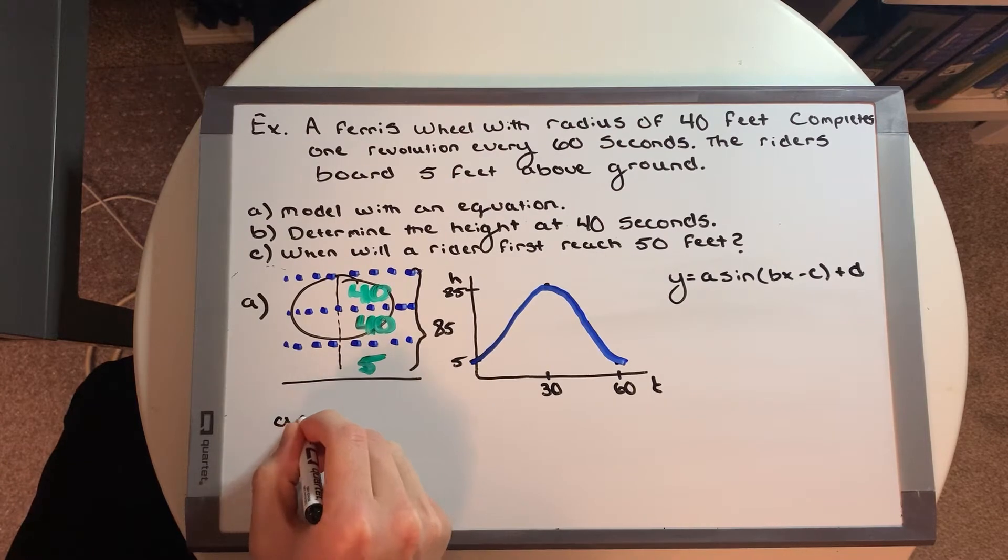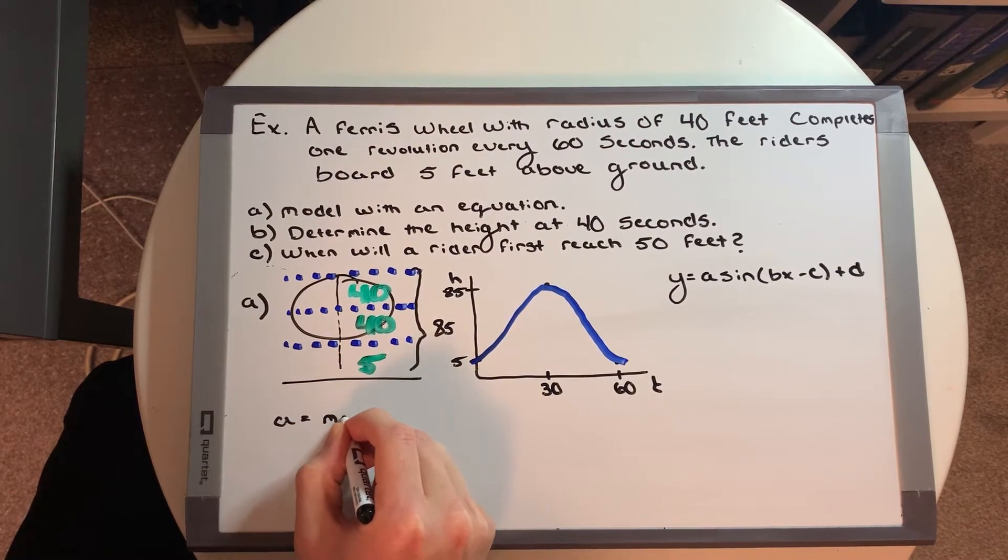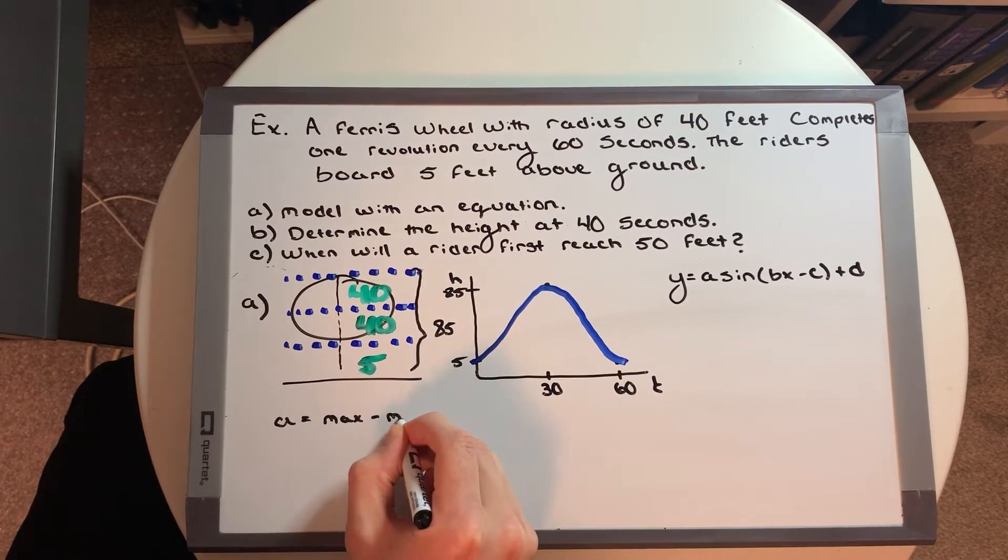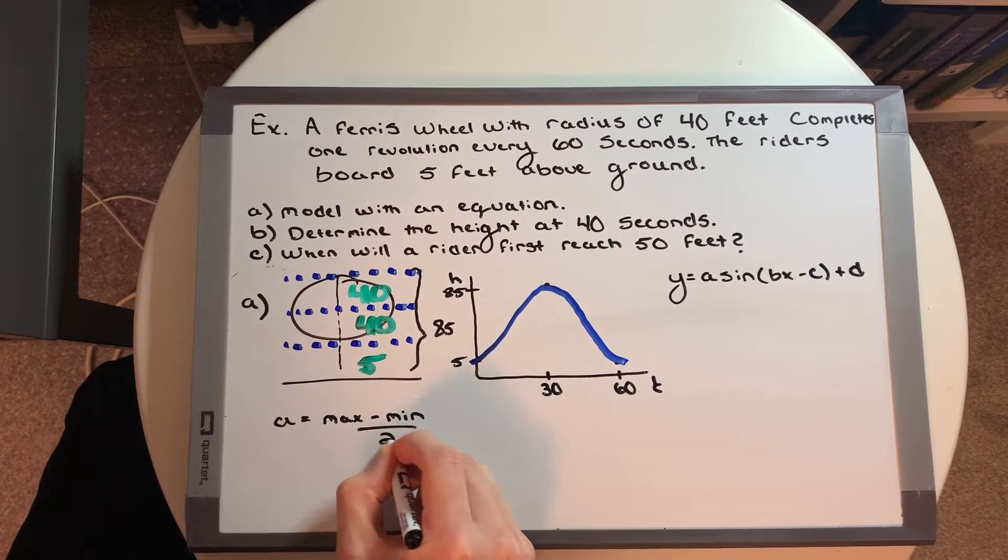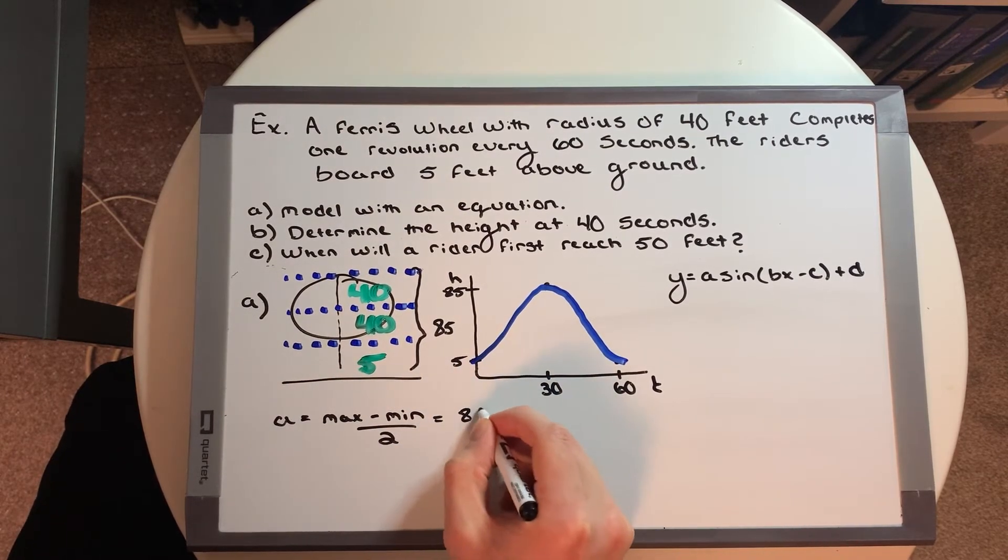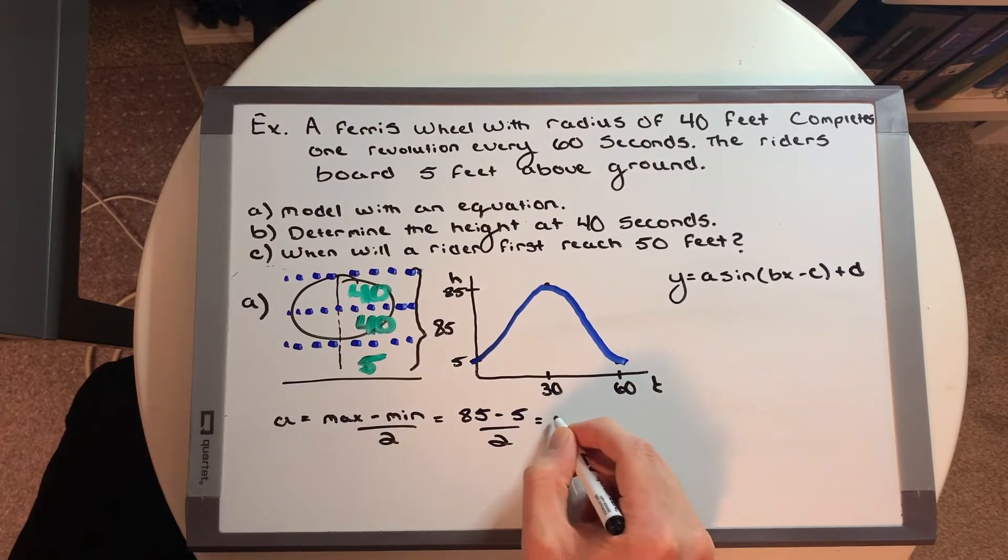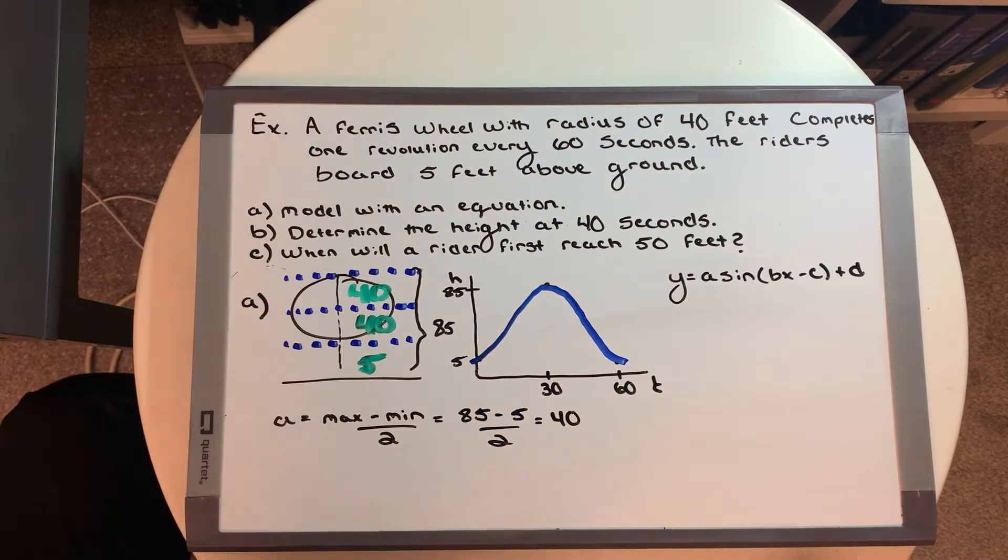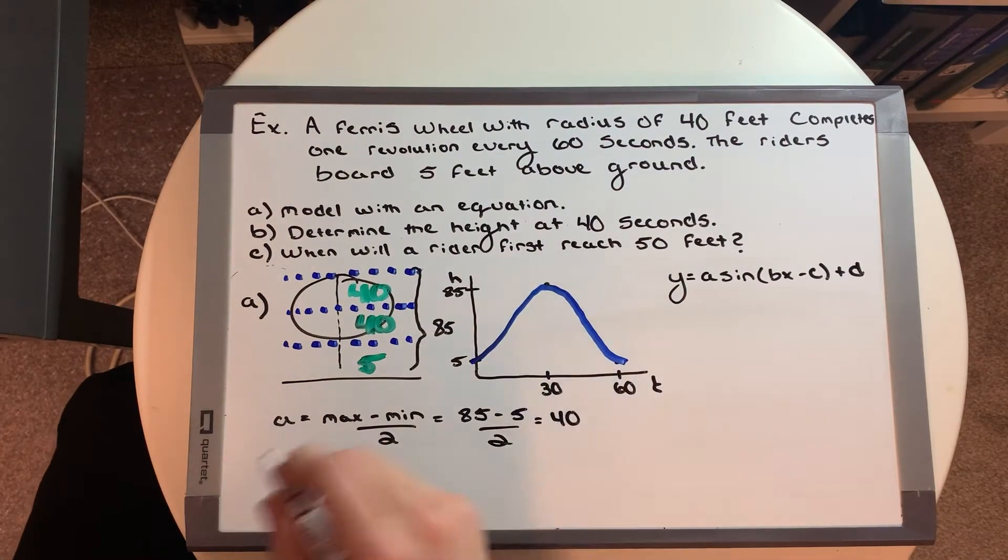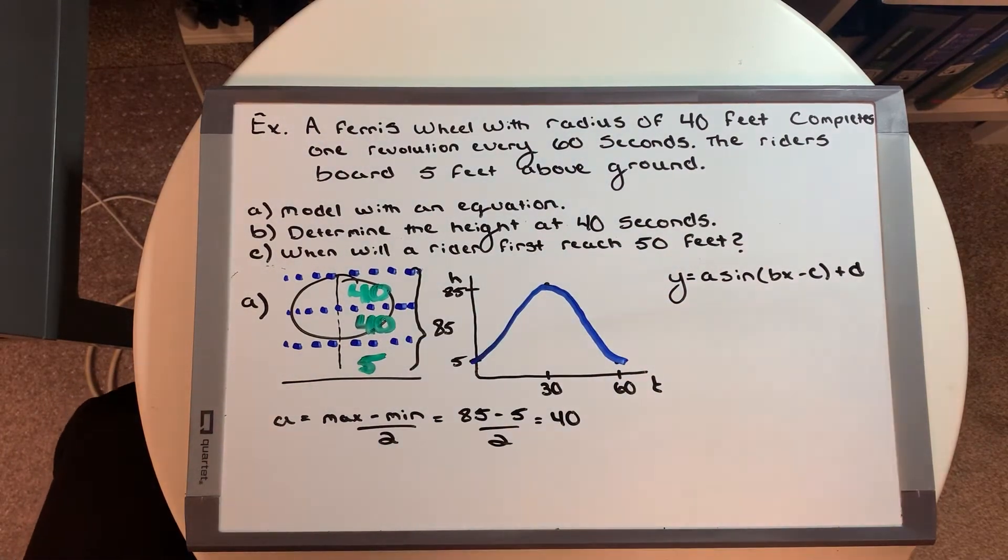A is solved as a is equal to maximum minus the minimum divided by two, which was 85 minus our five over two, which is equal to 40. Okay. So that makes sense. Cause that's our amplitude. That's how high from the middle to the bottom or from the middle to the top is. And that's just simply a radius. So that should make sense.